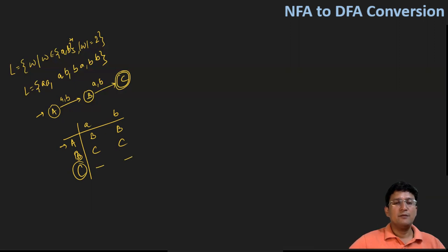C is transition on A and B is not defined. So either let it be blank, or I may write as phi also.